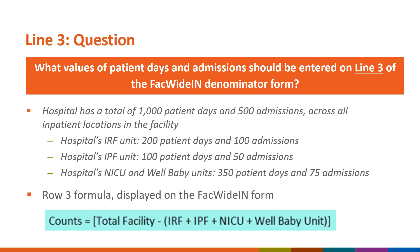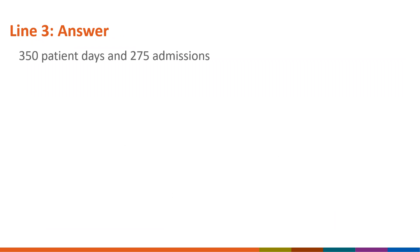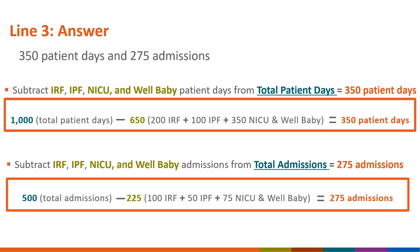Finally, what values should the hospital report on line 3 of the denominator form? The formula for calculating line 3 denominators is shown on the screen. Feel free to pause this video to complete the calculation. The correct answer is 350 patient days and 275 admissions. Line 3 values are a subset of line 1 and line 2 denominators in which counts from IRFs, IPF units, NICUs, and well baby units are subtracted.